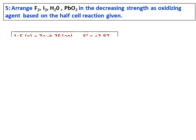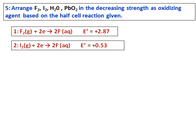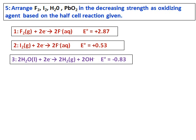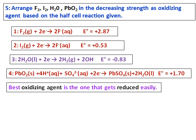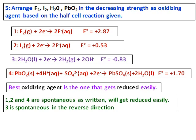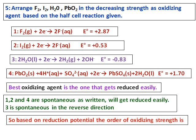Arrange fluorine, iodine, water, and PbO₂ in decreasing strength as oxidizing agents. Four half-reactions are given. The best oxidizing agent is the one that gets reduced most easily. Equations 1, 2, and 4 have positive E⁰ values, and the third has a negative E⁰, meaning that reaction is spontaneous in the reverse direction. Fluorine has the most positive value, making it the best oxidizing agent, followed by PbO₂, then iodine, and water last.